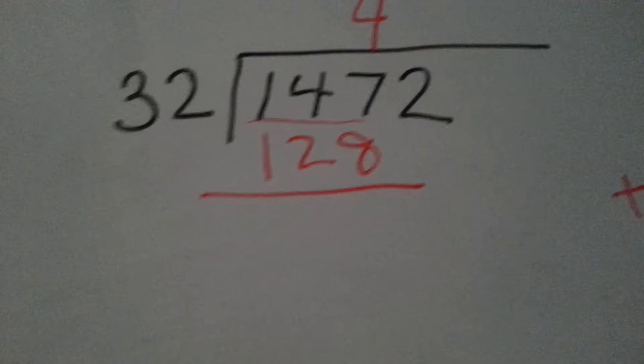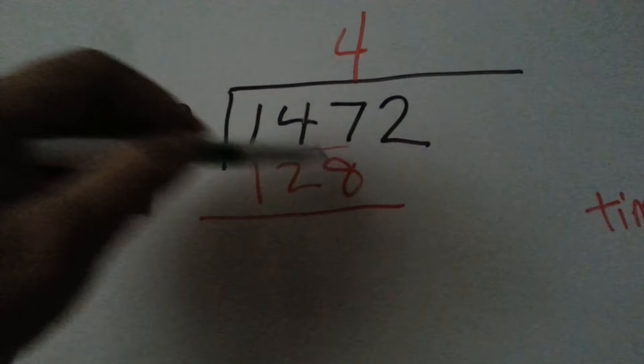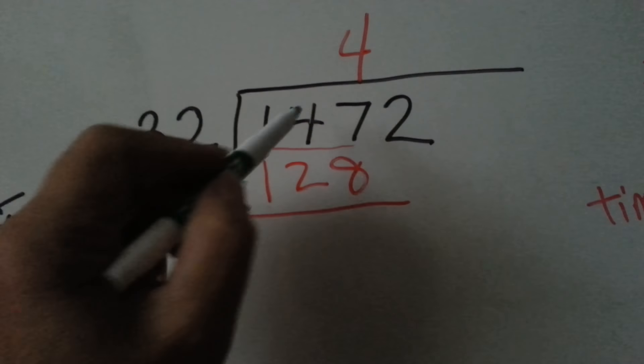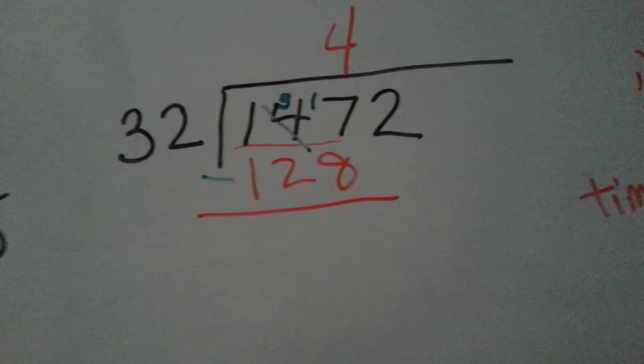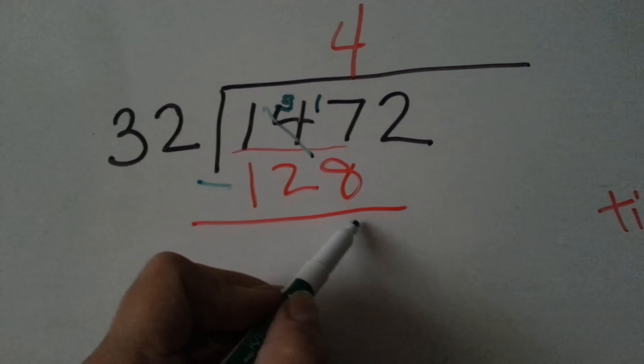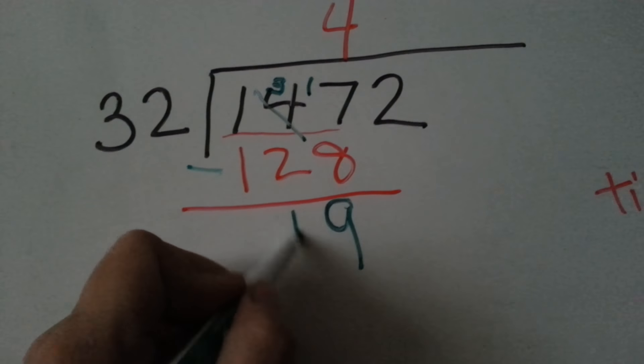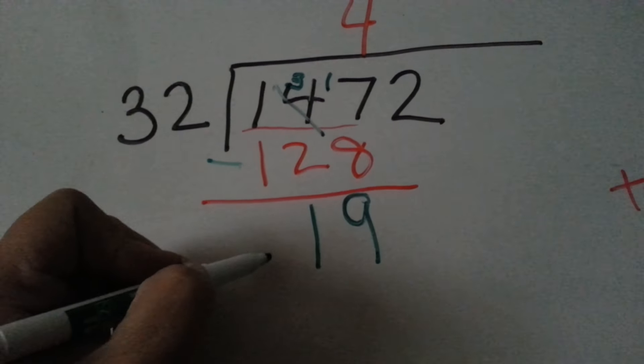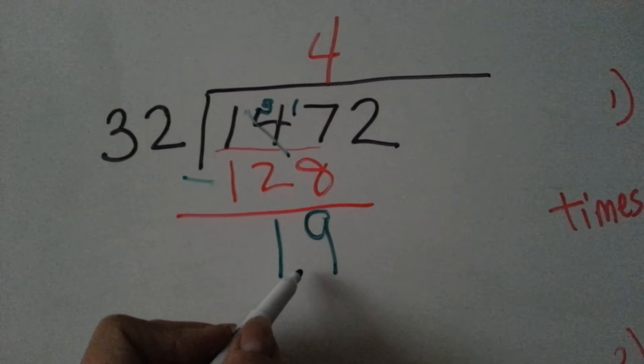Now what we're going to do is subtract. 7 take away 8, you can't do that, so we need to borrow it from the 4. That becomes a 3, that becomes a 17. 17 take away 8 is 9, and then 3 take away 2 is 1. Now we end up with 19, but 32 can't go into 19, which is a good thing. Because if it could, that means that should have been bigger.